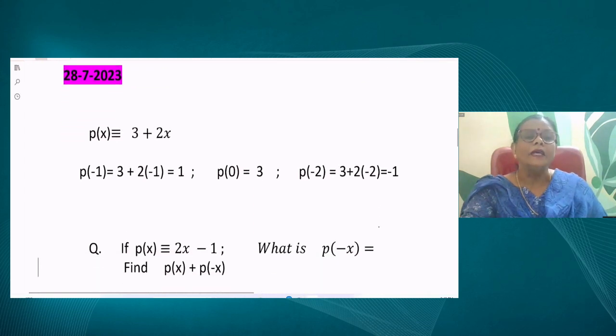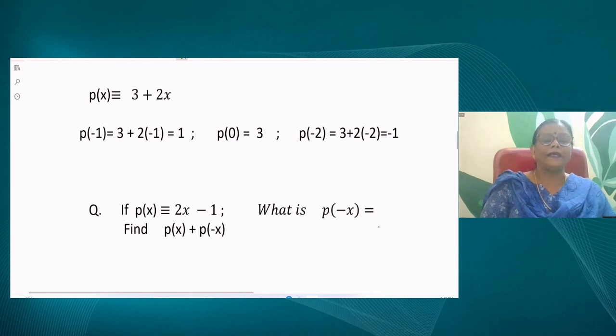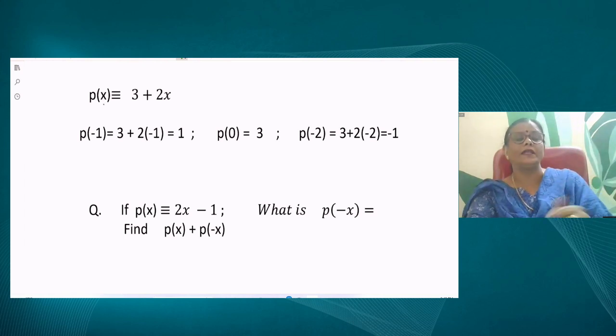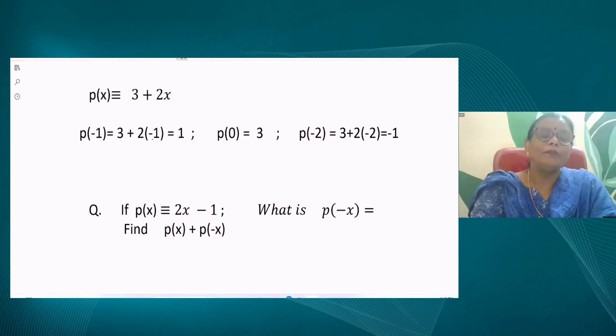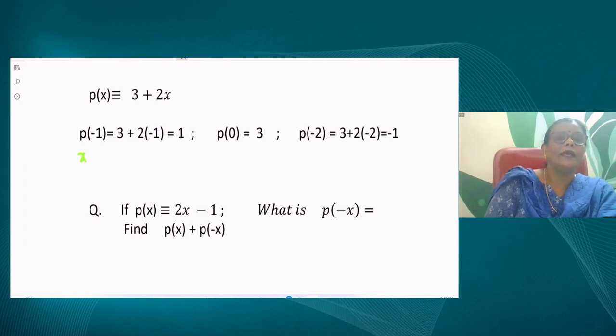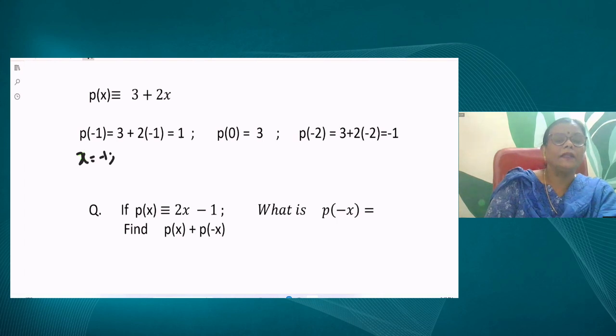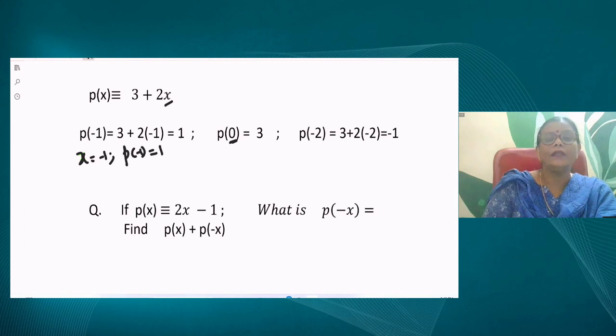Now let me take up today's class. You have a polynomial in x: 3 + 2x. Now what is p(-1)? We replace x value as -1. We are finding the value of this polynomial when x is -1. Put the value of x as -1, you get 1. When x is 0, you get p(0) as 3. For p(-2), you substitute -2.